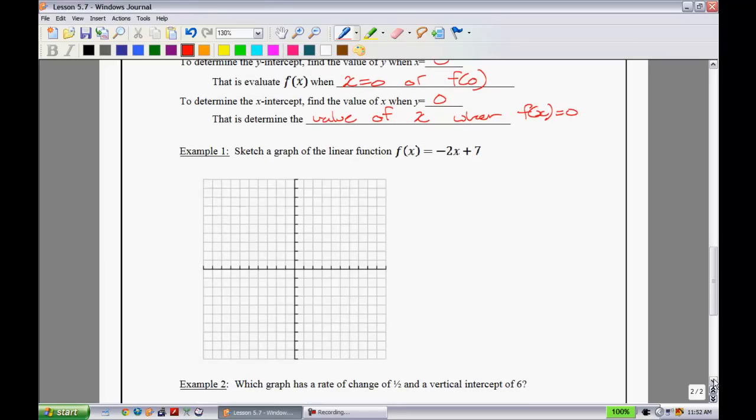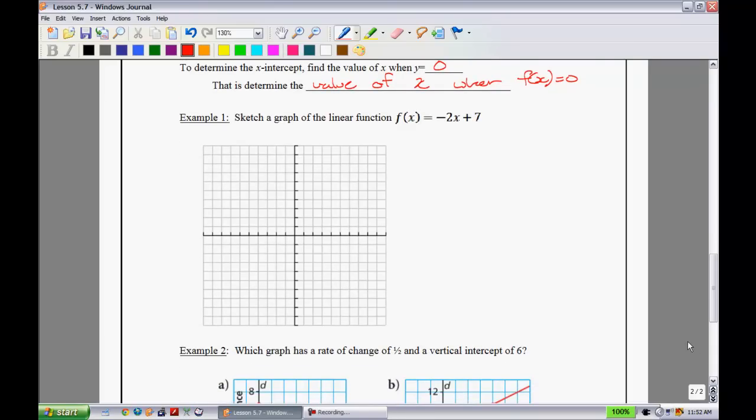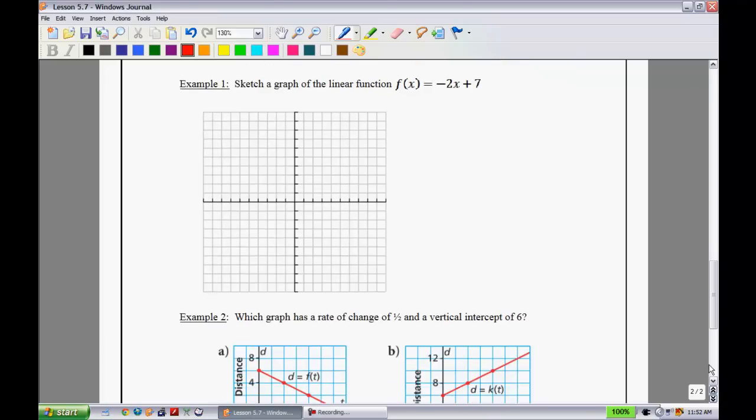We're going to try it for this linear relation right here. The function is f(x) = -2x + 7. Let's first try and figure out what the y-intercept is. The y-intercept is when you substitute in x equals zero. Therefore I'm going to be looking for this. So f(0) = -2(0) + 7. This tells me that my y-intercept is at 7.